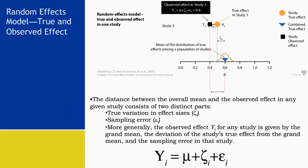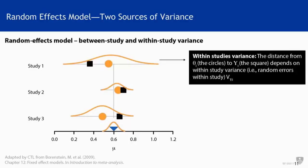Here is another way to look at it: y3 equals mu plus zeta three plus epsilon three. The distance between the overall mean and the observed effect in any given study consists of two distinct parts — the true variation in effect sizes, which are the zeta i's, and the within-study sampling error epsilon i's. More generally, the observed effect yi for any given study can be written as a grand mean, plus the deviation of the study's true effect from the grand mean, plus the sampling error in that study. Because the circles — the true effects in each individual study — follow a distribution, there are two sources of variance.